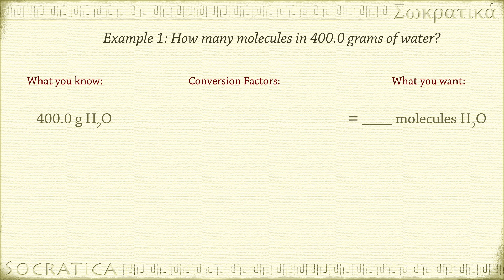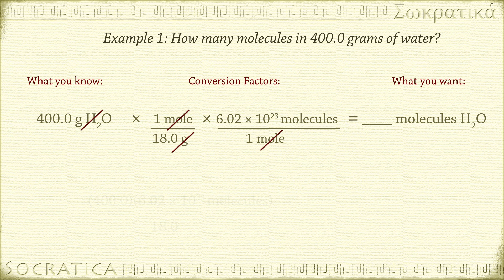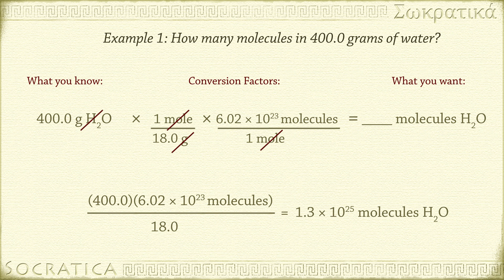400.0 grams of water times 1 mole of water per 18.0 grams of water times 6.02 times 10 to the 23rd molecules of water per 1 mole of water equals some number of molecules of water. Grams of water cancel, and moles of water cancel, leaving us with molecules of water. 400.0 times 6.02 times 10 to the 23rd divided by 18.0 equals 1.3 times 10 to the 25th molecules of water.